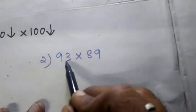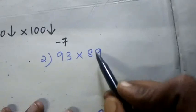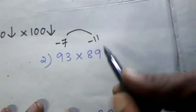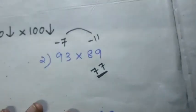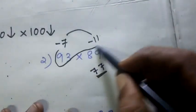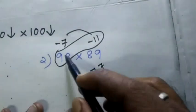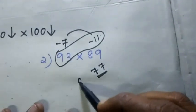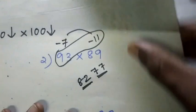Next question. This is 10, this is 7, this is 10, this is 11. So multiply: 77. Next, cross: 93 minus 11. 93 minus 11 is 82. Now the answer is 8277.